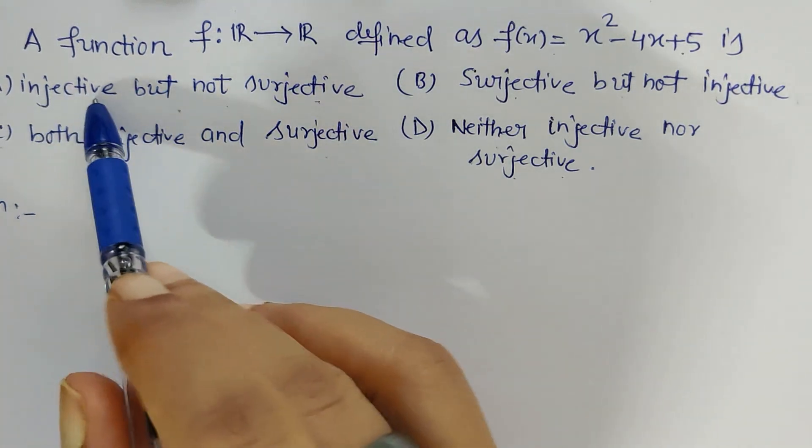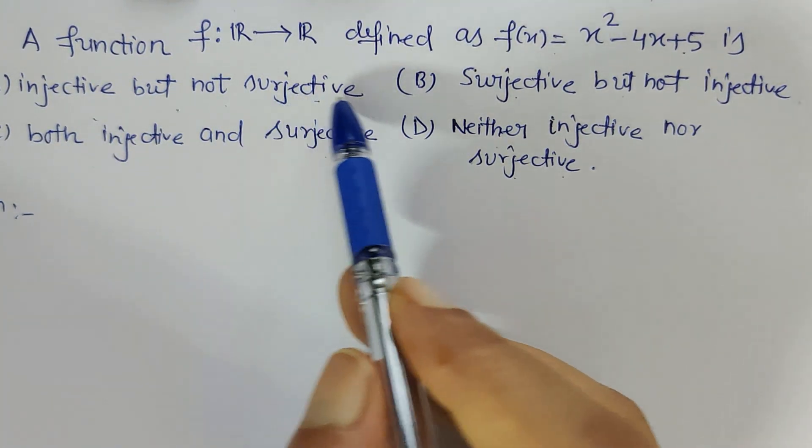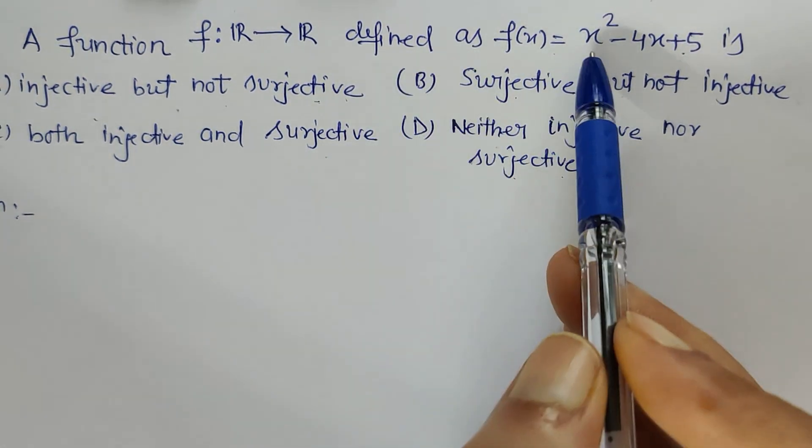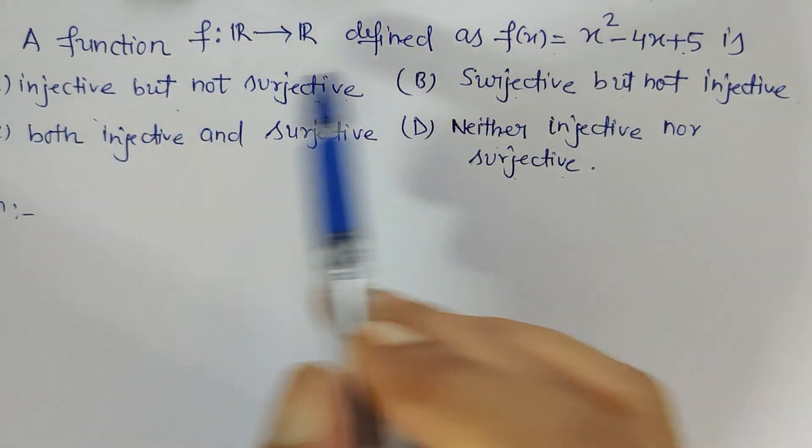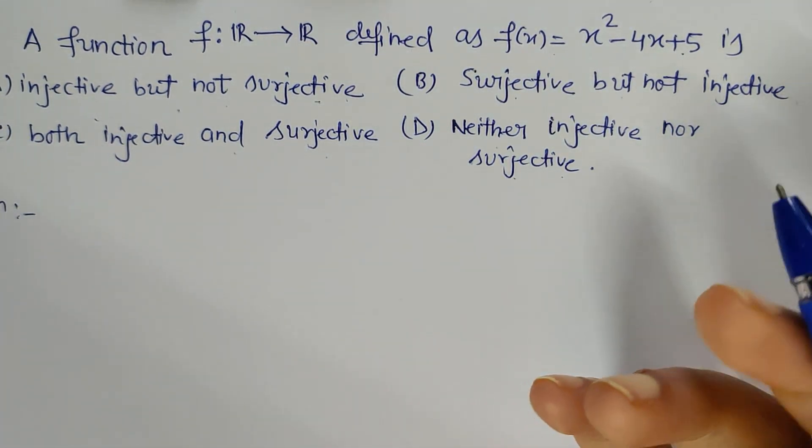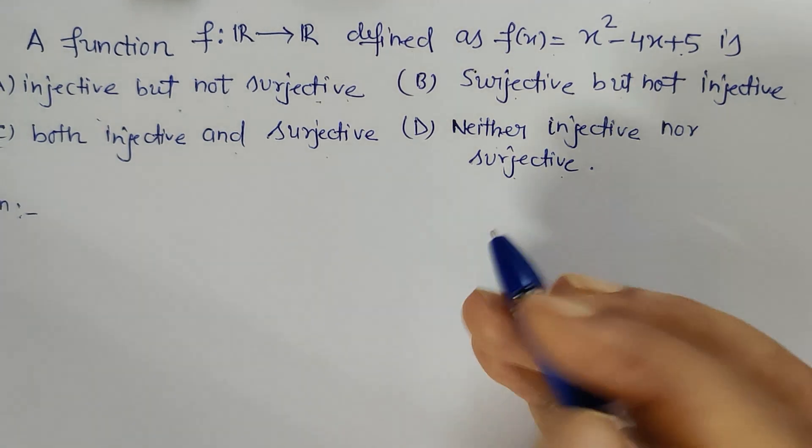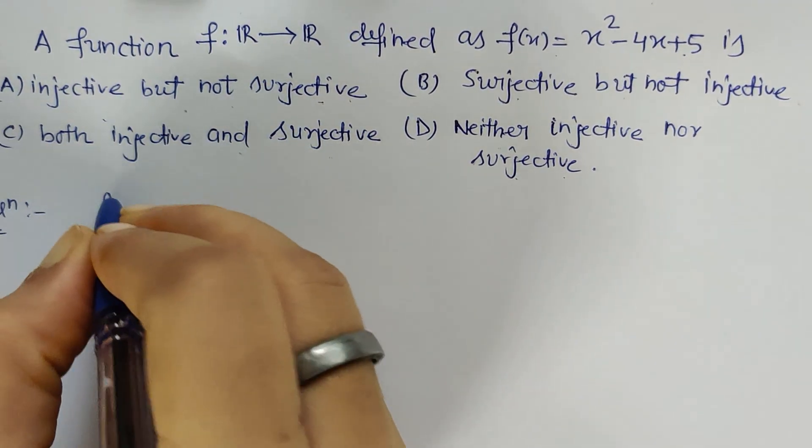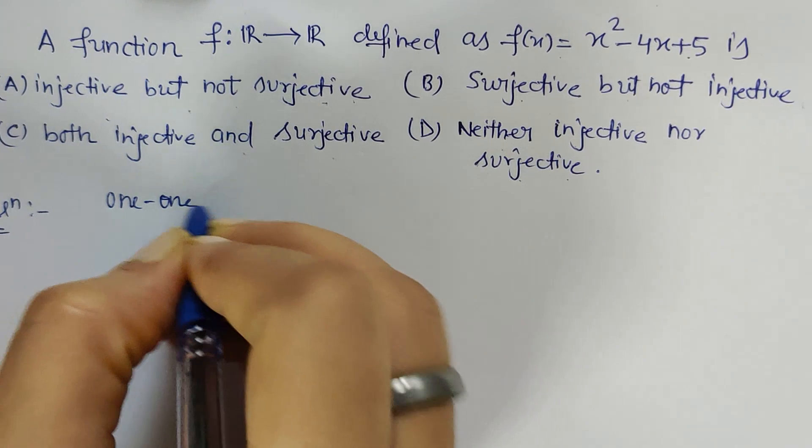What is injective and surjective? Injective means one-to-one and surjective means onto. We have to check this function is which out of the four, and that can be done only if we are aware of the concept of one-to-one and onto. Let's first check if it is one-to-one or not.